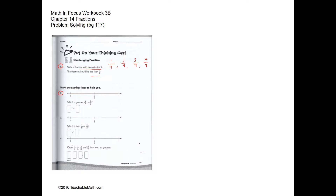Question two: which is greater, three sevenths or two thirds? Three sevenths is less than one half, so it falls around here on the number line. Two thirds is more than one half, so using one half as a benchmark, two thirds is greater than three sevenths.